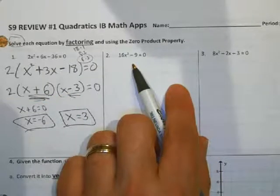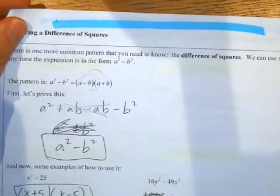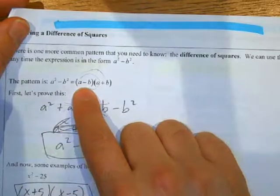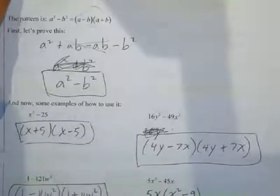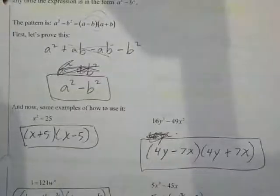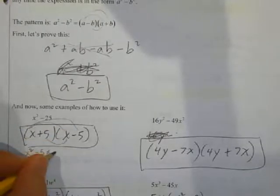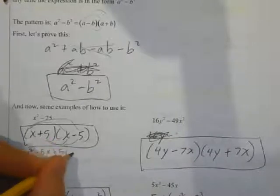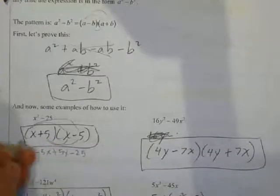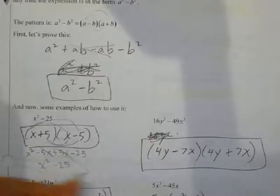Now this here is called difference of squares. There are people that had a lot of trouble with that in class today. So if you look at the S9A handout, there's a whole section on difference of squares: if I've got a squared minus b squared, that's the same thing as a minus b times a plus b. So if I've got x squared minus 25, that's going to be x plus 5 times x minus 5. You can check: x times x gives me x squared, x times negative 5 gives negative 5x, 5 times x gives plus 5x, and 5 times negative 5 is negative 25. The negative 5x and the 5x cancel out, and we're left with x squared minus 25.